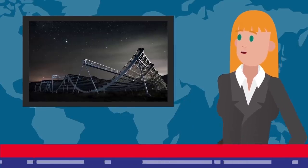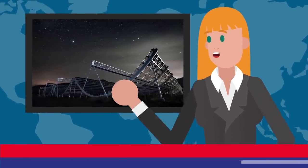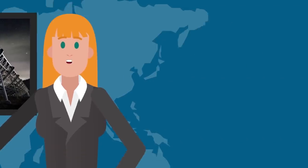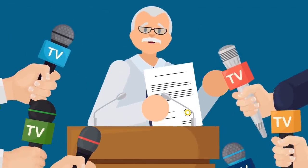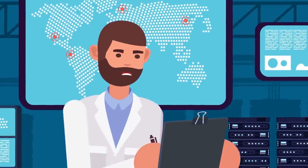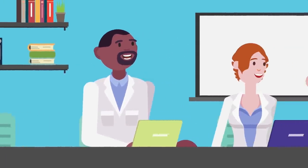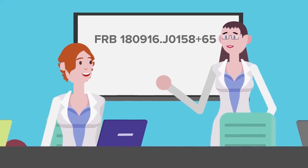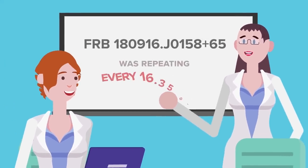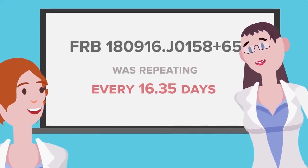Near the beginning of 2020, scientists with the Canadian Hydrogen Intensity Mapping Experiment or CHIME released a paper which announced an interesting discovery. Not only was the Earth receiving far more FRBs than previously thought, they had observed that FRB 180916J0158 plus 65 was repeating every 16.35 days.